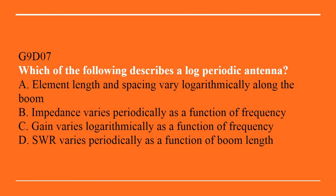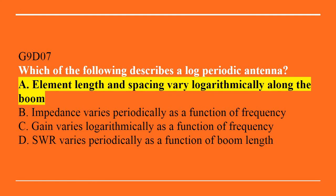G9D07: Which of the following describes a log periodic antenna? A. Element length and spacing vary logarithmically along the boom. B. Impedance varies periodically as a function of frequency. C. Gain varies logarithmically as a function of frequency. Or D. SWR varies periodically as a function of boom length. The answer is A — element length and spacing vary logarithmically along the boom.